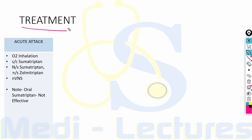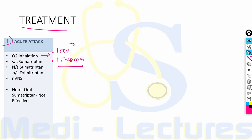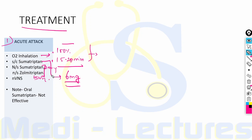Treatment of cluster headache is divided into acute attack treatment, prevention, and neuromodulation therapy. For acute attacks, since attacks peak rapidly, treatment with rapid onset is very important. First: 100% oxygen inhalation for 15 to 20 minutes, which can abort an attack — high flow and high oxygen contact is important. Second: subcutaneous sumatriptan 6 mg injection, which can shorten the attack. An alternative is nasal spray sumatriptan 20 mg or nasal spray zolmitriptan 5 mg — a good alternative for patients who do not want to self-inject.